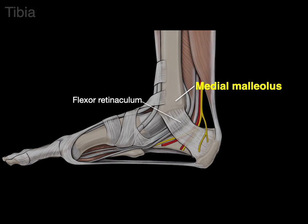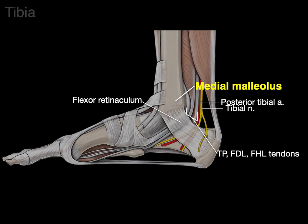Through the tarsal tunnel we have the posterior tibial artery and vein, the tibial nerve, and then the Tom, Dick, and Harry tendons: tibialis posterior, flexor digitorum longus, and flexor hallucis longus — all of which course through that tarsal tunnel.